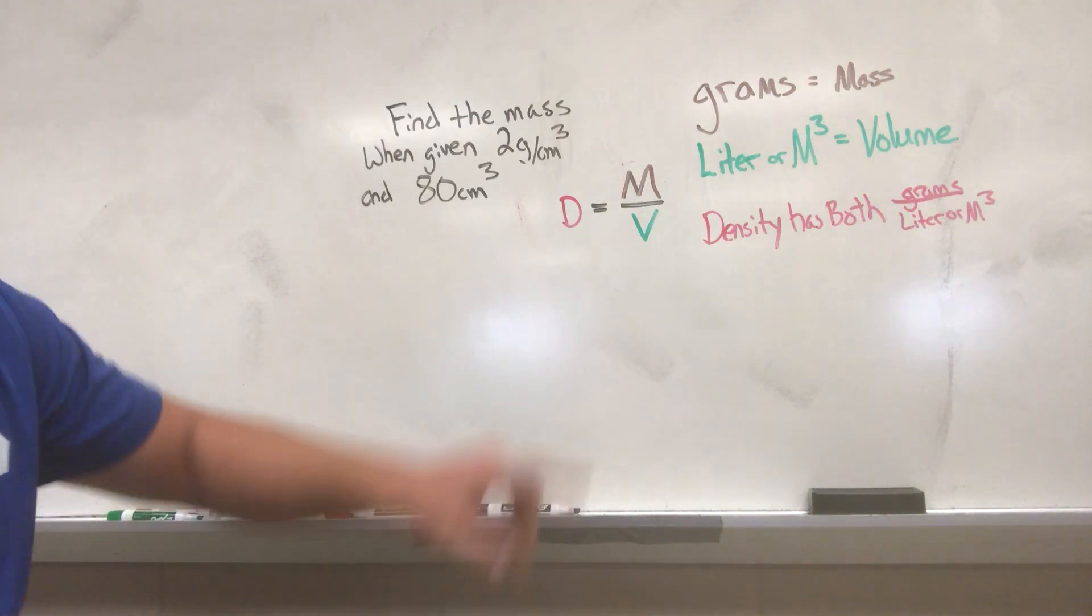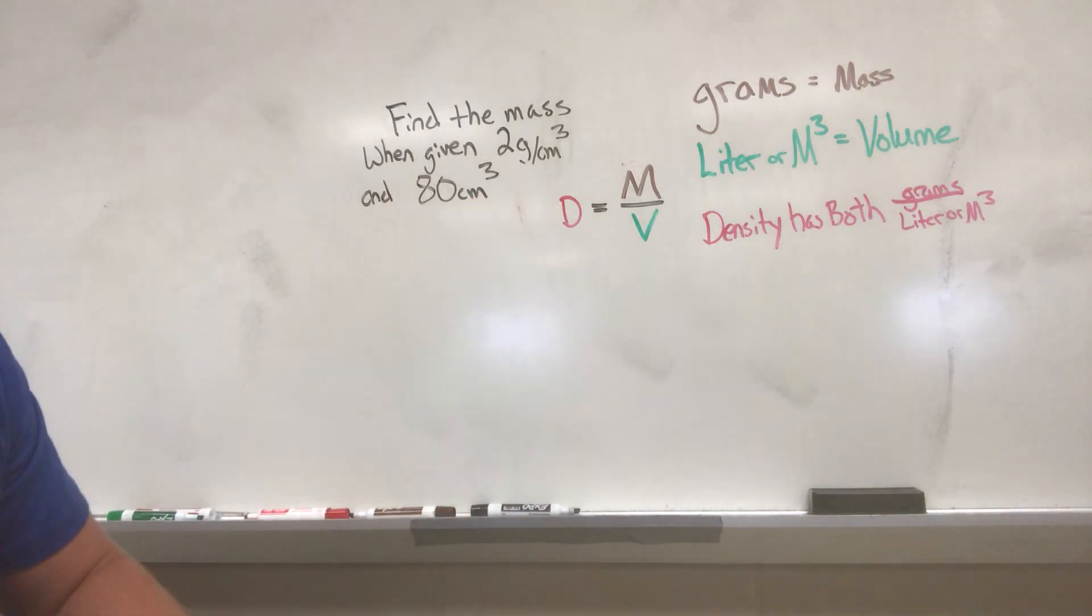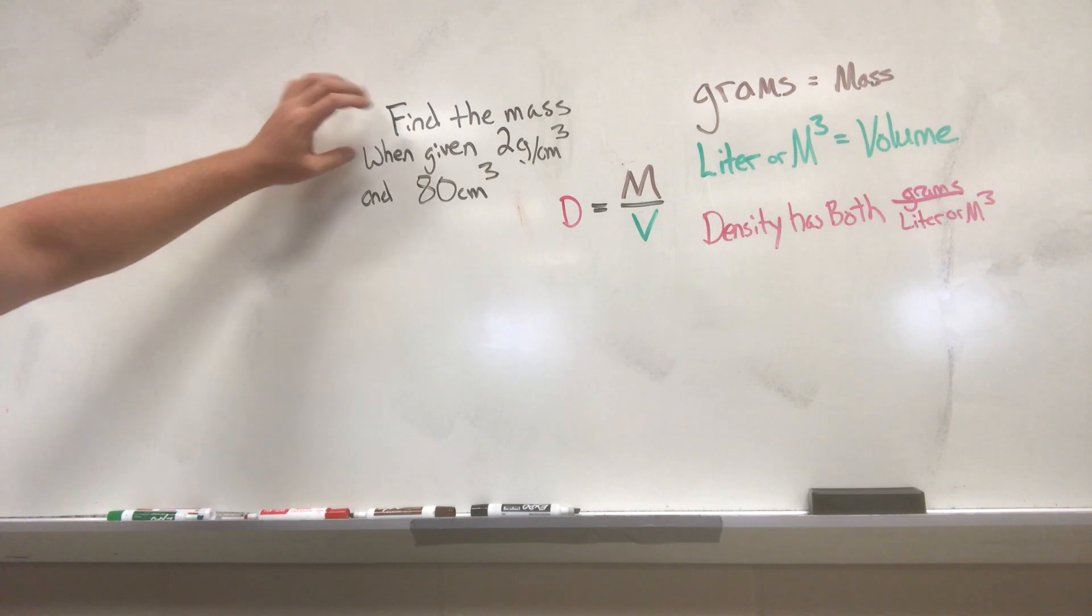All right, here we're going to be trying to solve for the mass when we're given a volume and a density. So here it says find the mass when given 2 grams per centimeter cubed and 80 centimeters cubed.